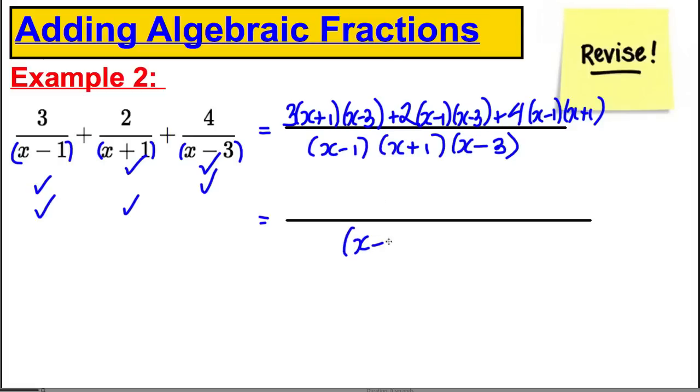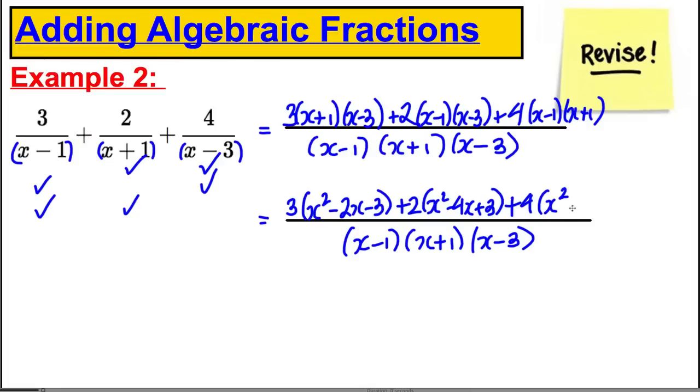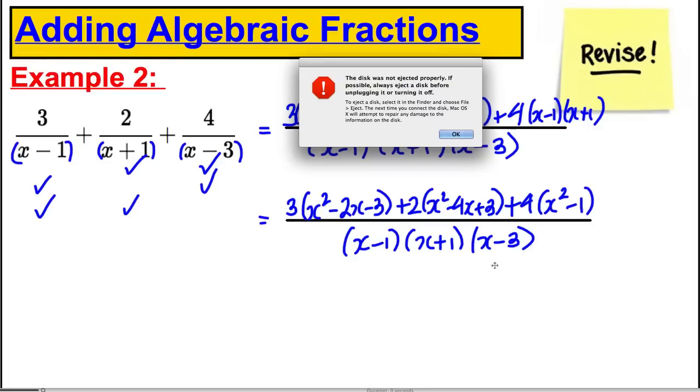So keep your denominator x subtract one, x plus one, x subtract three. Let's leave the three outside and let's just expand this bracket here. This would be x squared subtract two, x subtract three, plus two. And expanding this would be x squared subtract four x plus three. And expanding this bracket here, it would be four. And you should notice these are a difference of two squares. So I get x squared subtract one.